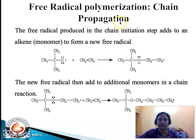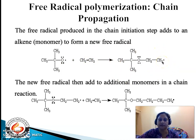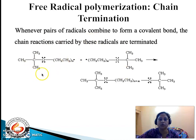In chain propagation, the free radical formed attacks a monomeric unit to give rise to another free radical — the propagating site is a free radical. This new free radical adds to additional monomers in a chain-like reaction to give rise to further free radicals. In the chain termination step, two similar or two dissimilar free radicals combine together via a covalent bond to give rise to a polymer.